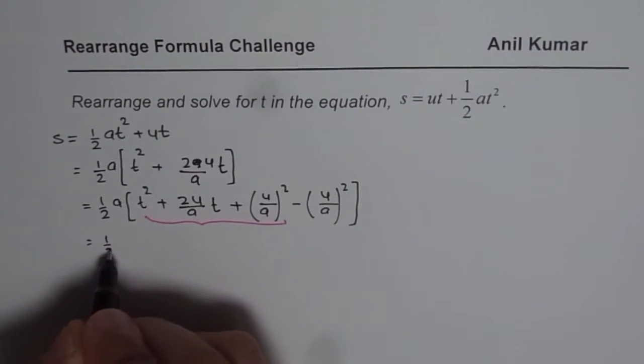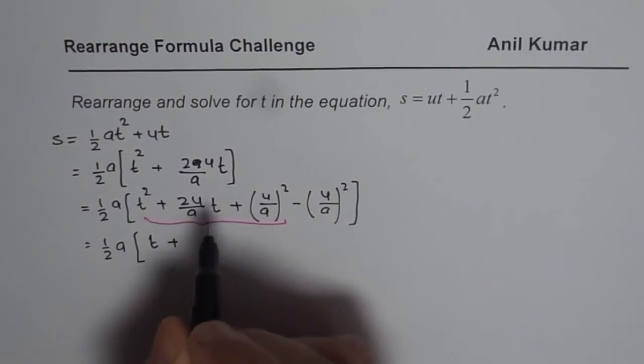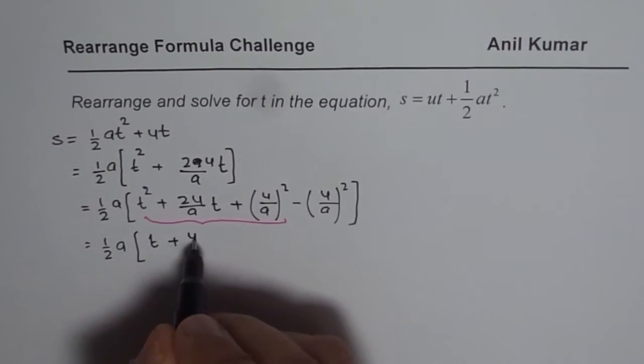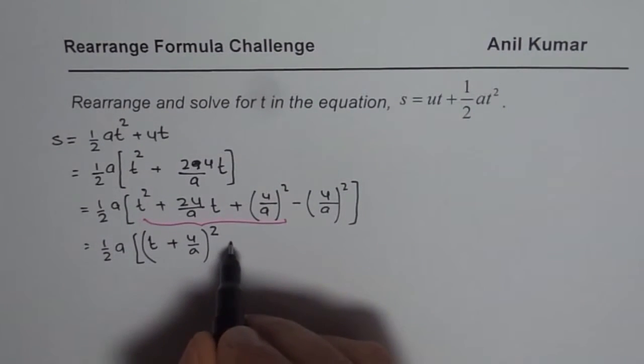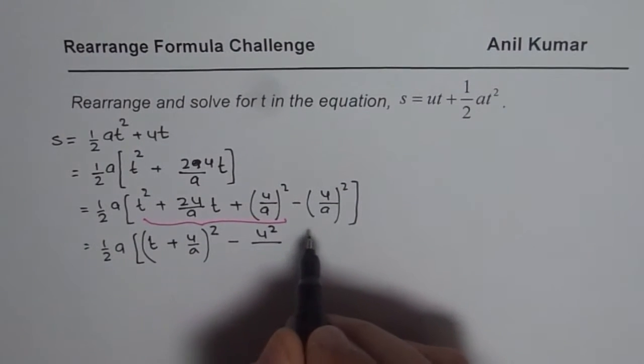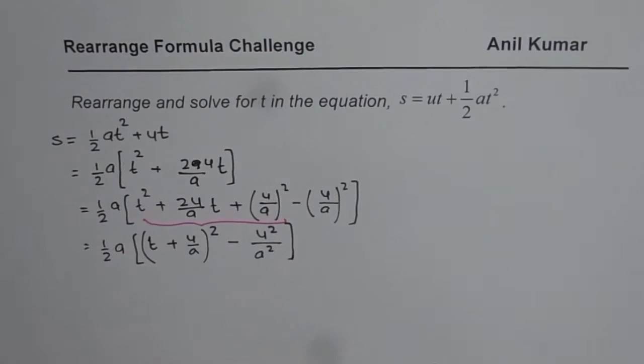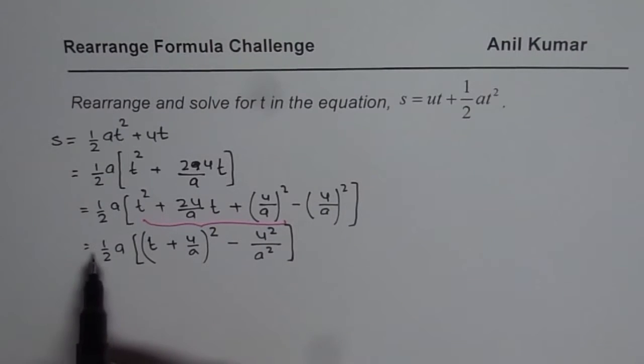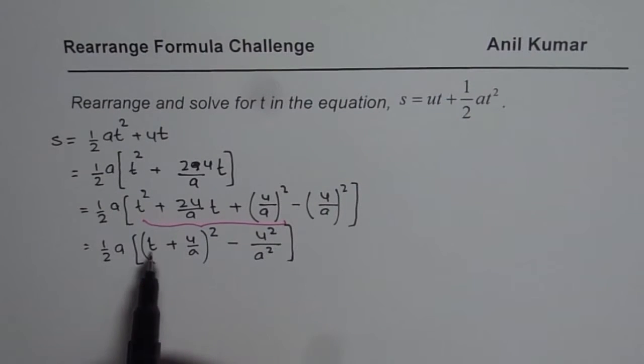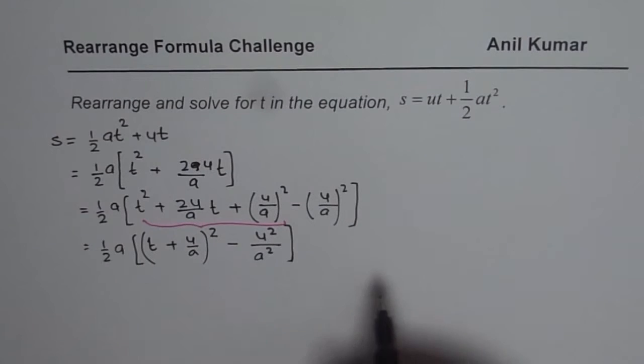So we could now write this as half of a, t plus u over a whole square. And this term here will be minus u square over a square. So that is s equals to all this. By doing so, what we have done is, we have kind of isolated t. Now we can rearrange our formula and write down the equation.